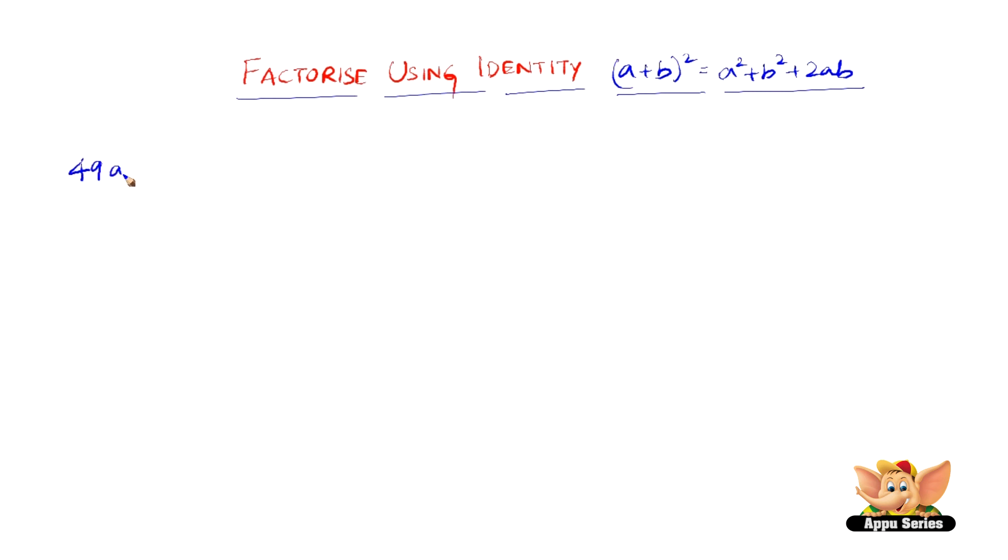Let us consider 49a square plus 70ab plus 25b square. Now here,